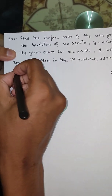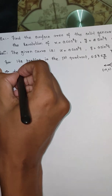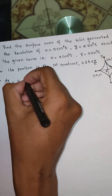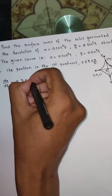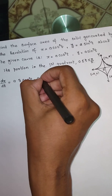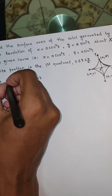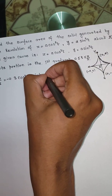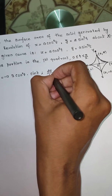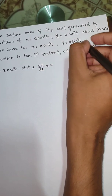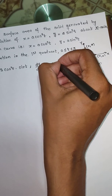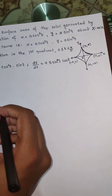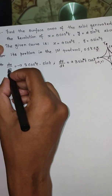We will use the parametric formula to find the surface area. Let us find dx/dt and dy/dt. For dx/dt: differentiating x = a cos³t gives dx/dt = −3a cos²t sin t. For dy/dt: differentiating y = a sin³t gives dy/dt = 3a sin²t cos t.